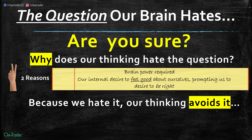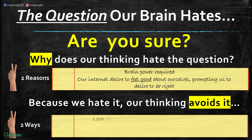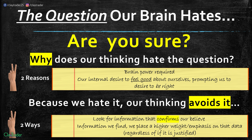Because we hate this question, our thinking avoids it in two ways. First, we just look for information that confirms what we already believe — what our thought or assumption already is. Second, information we find, we place a higher weight and emphasis on that data, regardless of whether it's justified. If we find information that confirms what we believe, we put even more value on it. It's kind of like a snowball — we subconsciously build a brain snowball of confirmation, building more confidence and belief until we're fully locked in.